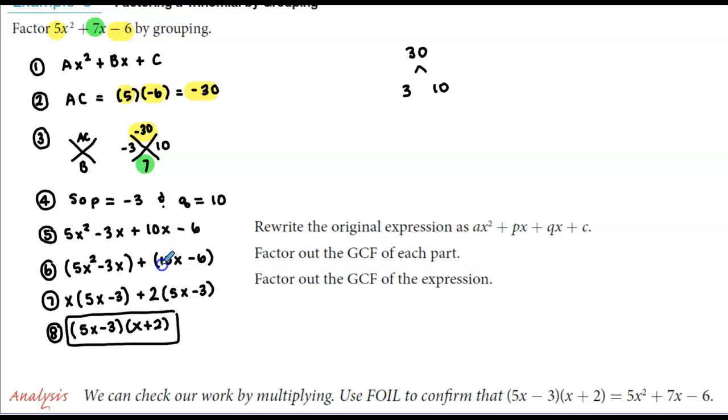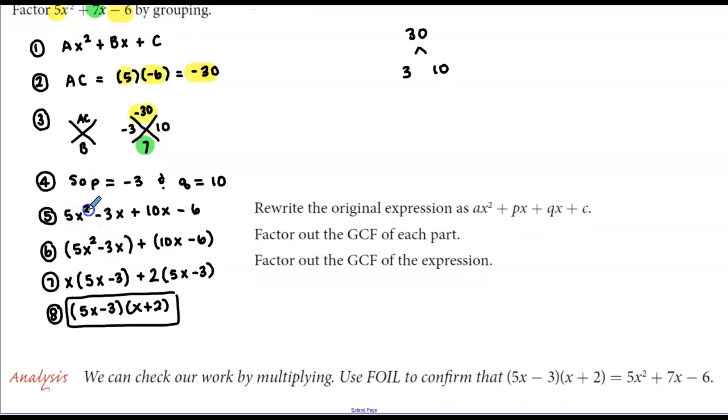Now we factor by grouping. We group the first two terms, 5x² - 3x, plus the last two terms, 10x - 6.